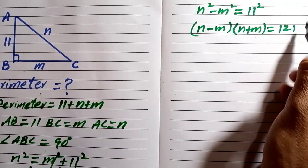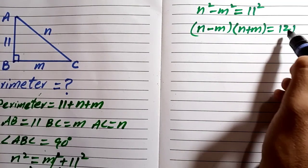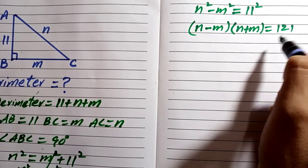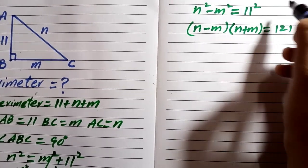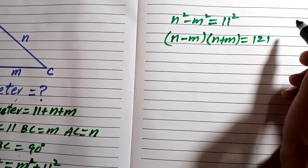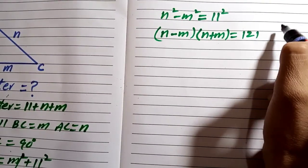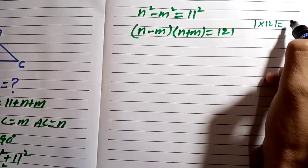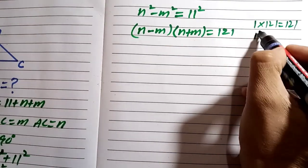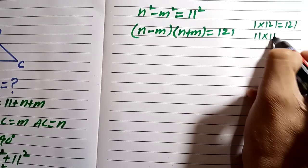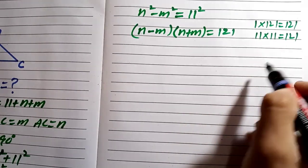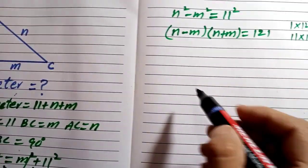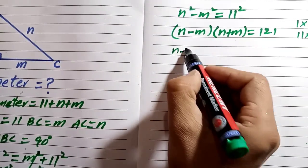Our aim is to find the values of n and m, so we write 121 in its factor form. We know 121 equals 11 multiplied by 11, so we can write n minus m and n plus m using these two factors.